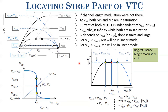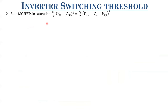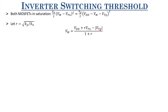Now let us calculate the inverter switching threshold VM. At VM, both MOSFETs are in saturation — setting IDS_N equal to IDS_P and neglecting channel length modulation. Defining R = √(Kp/Kn), the formula becomes VM = (Vdd + R·(Vdd - |Vtp|)) / (1 + R), where Kp and Kn include the W/L ratios, oxide capacitance, and carrier mobilities. R represents the ratio of the relative driving strengths of PMOS to NMOS.